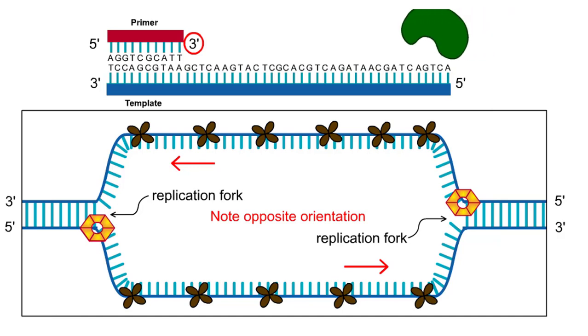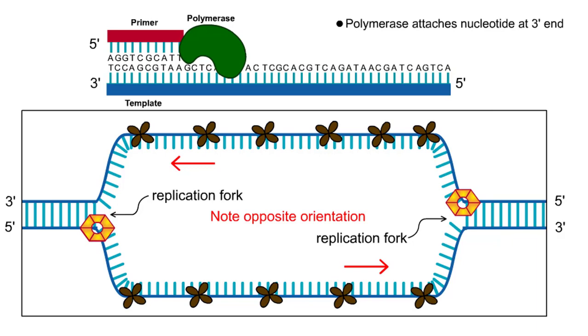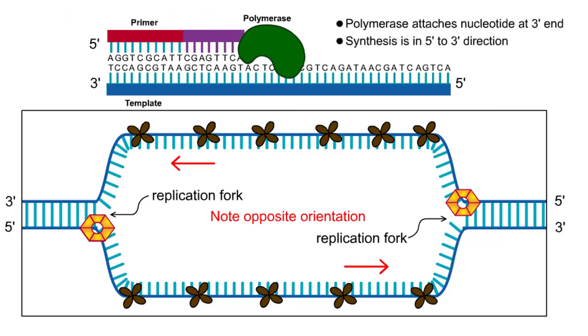Hooking the 5' phosphate group of an incoming nucleotide onto the 3' hydroxyl group at the end of the growing nucleic acid chain. Because the chain grows by extension off the 3' hydroxyl group, strand synthesis is said to proceed in a 5' to 3' direction.